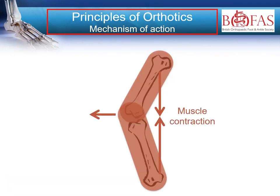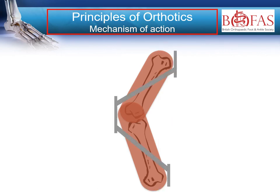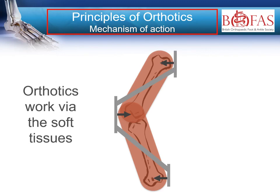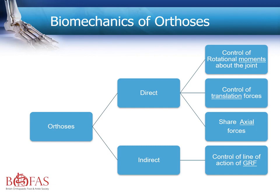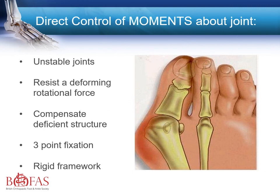What is key to understand is that the orthotic can only work through the soft tissues if the soft tissues are adequate and flexible. Orthotics can have a direct or an indirect effect. If acting directly, they control rotational movements, translational forces or movements, and can share axial forces. When working indirectly, an orthotic controls the line and action of the ground reaction force. In this diagram, for an unstable first MTP joint, a bunion causes difficulties due to failure of the rotational moment around the joint, and an orthotic will apply three-point fixation in a rigid manner to help prevent the deformity.